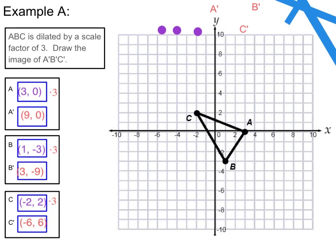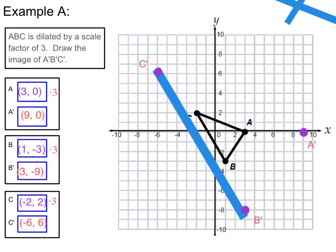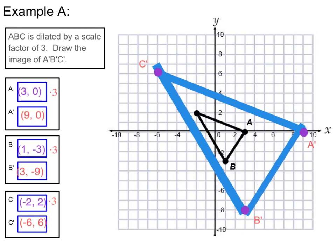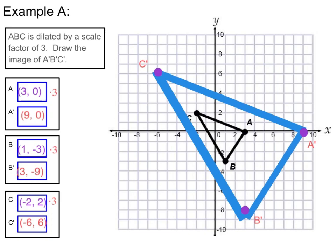Now that I've performed my dilation, I'm going to plot my points on the graph and draw straight lines to connect them. Since my scale factor was larger than 1, my figure should get larger and the vertices should be further away from 0. So I'm going to go to positive 3, down to negative 9, over to negative 6, and up to positive 6. Each point is significantly further away from the origin than the originals. I'm going to label them A prime, B prime, C prime, and bring in my straight lines to make a triangle. Remember to use a straight edge or ruler to make yours look like mine.